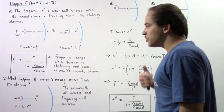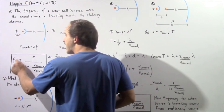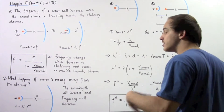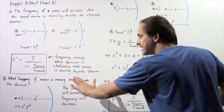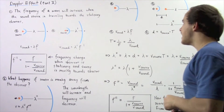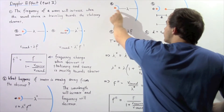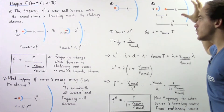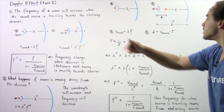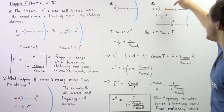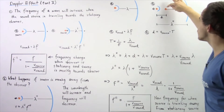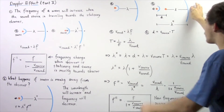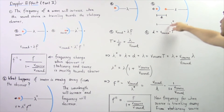In the same way that we derived the equation for F prime in the previous lecture, let's now derive the equation for F 2 prime — the new frequency when the source is moving away from the stationary observer. In case A we have the stationary observer with wavelength lambda. In case B, our source is moving away, and in some time period T, it travels a distance d.